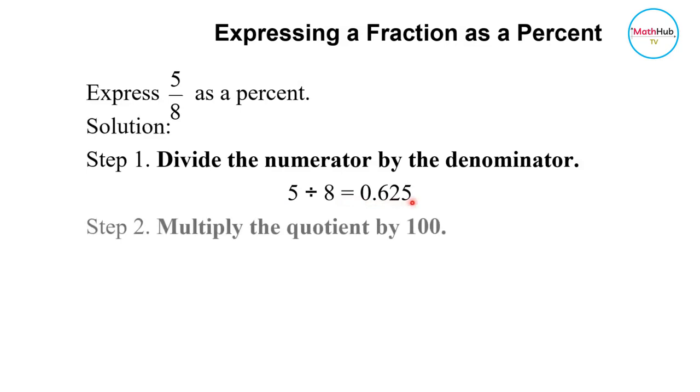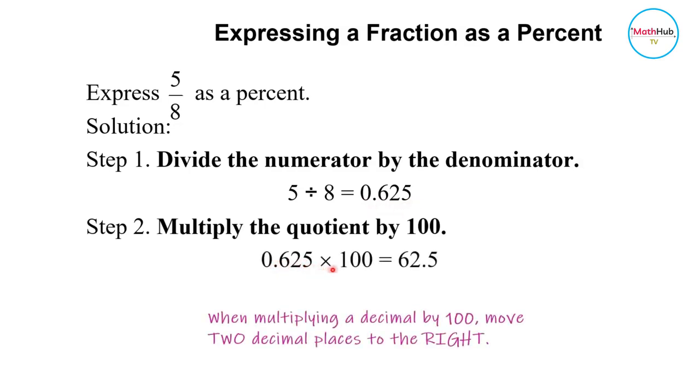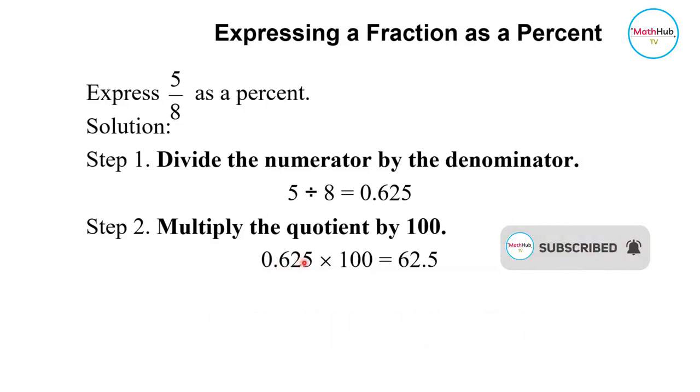After this, we multiply the quotient by 100. When multiplying a decimal by 100, all you need to do is move the decimal point two places to the right. This gives you 62.5.